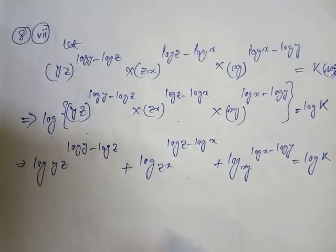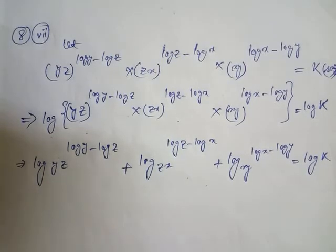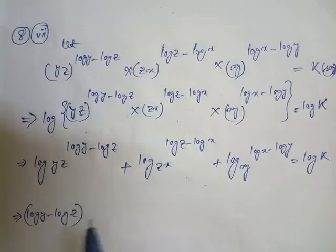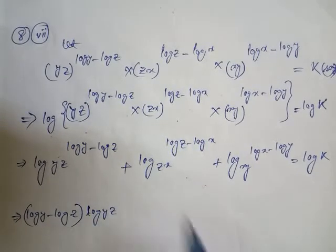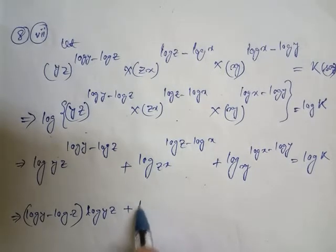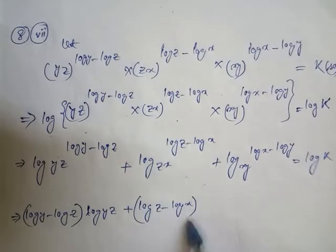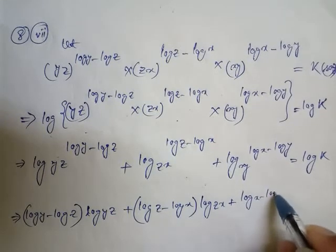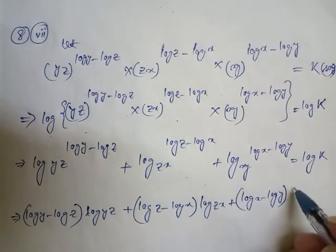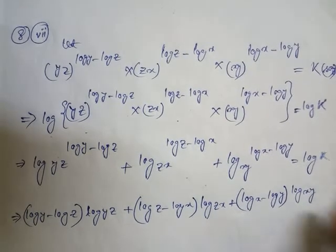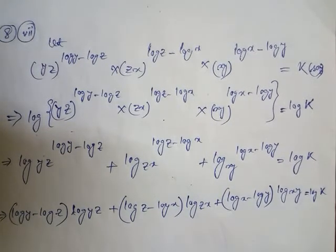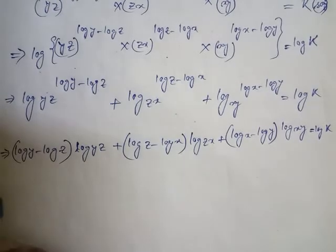Now, since we have log base to some power, the exponent comes down. So here: (log y minus log z) in one bracket and log(y·z) here. Similarly, (log z minus log x) in one bracket and log(z·x) here. And (log x minus log y) in one bracket and log(x·y) here. This equals log k.